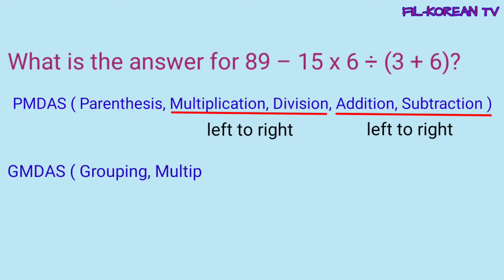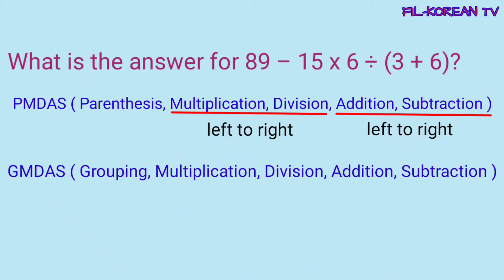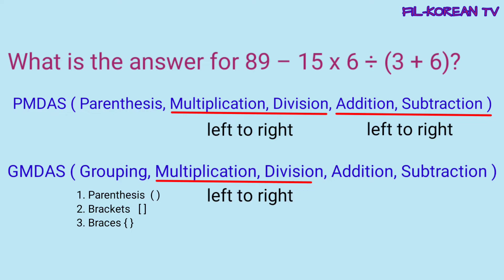Ang GEMDAS naman stands for: G - grouping, M - multiplication, D - division, A - addition, S - subtraction. Dito sa grouping, kapag ang ginamit na groupings ay dalawa o tatlo, ang tamang pagkakasunod-sunod ng pag-solve ay yung galing sa pinakaloob na grouping symbol papunta sa labas. Uunahin natin yung nasa loob ng parenthesis, sunod yung nasa brackets, at pangatlo yung nasa braces. Kapag natapos na, isusunod na natin ang multiplication at division left to right, then addition at subtraction left to right.